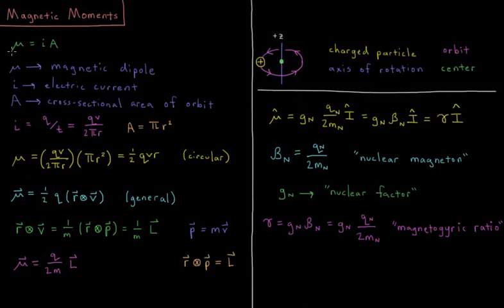So what is the magnetic dipole in this case of this particular charged particle? The magnetic dipole mu is equal to the electric current that it's creating by moving times the cross-sectional area of that orbit that it's in.